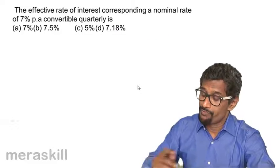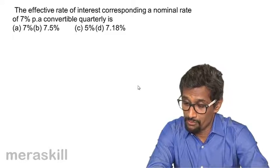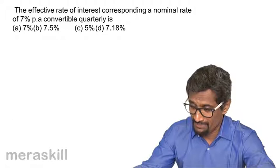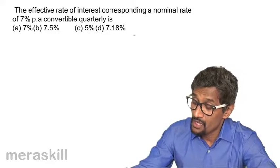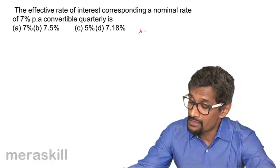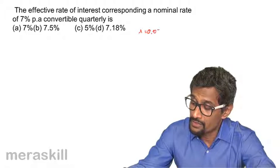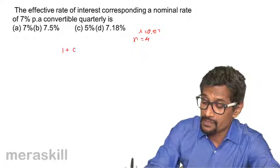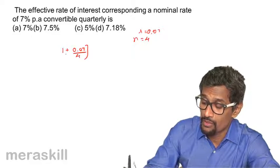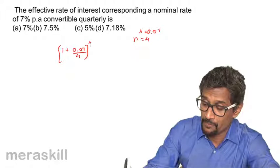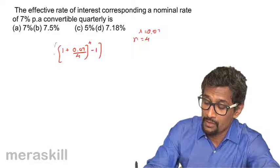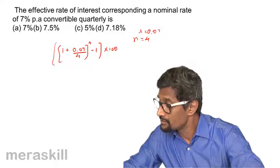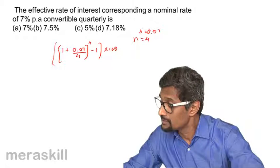Furthermore, the effective rate of interest corresponding to a nominal rate of 7% per annum convertible quarterly. So we have R is 7%, that is 0.07, N is 4. So it's going to be 1 plus 0.07 by 4 raised to N, that is 4, minus 1 into 100.